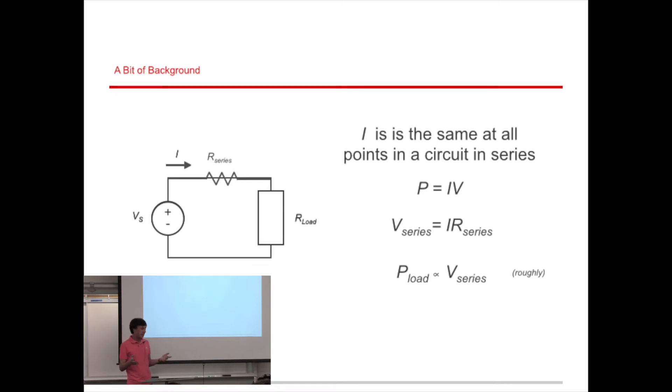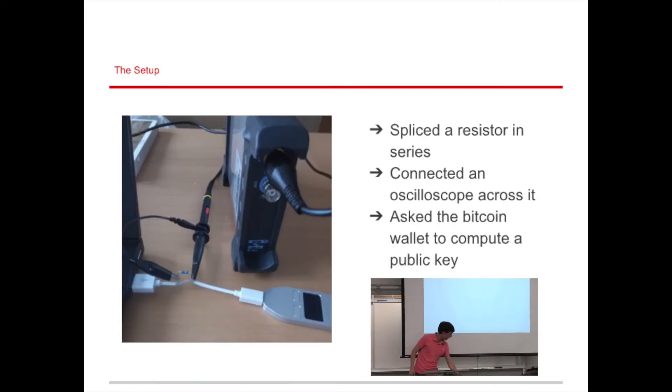So what did he do to get the private key out of the Trezor? Well, he took the Trezor and he spliced a resistor in series in the USB cable. So we have this resistor in series. And then he connected an oscilloscope across the resistor. And he asked the Bitcoin wallet to compute a public key. And through the computation of the public key, it would loop over the bits of the private key and leak information about the private key through the power consumption, through the voltage across the resistor.